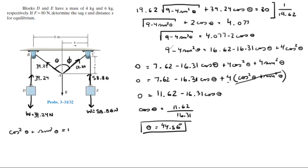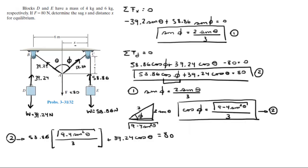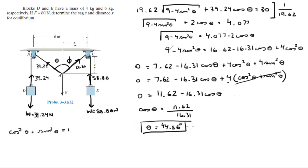Now that we have theta, we can plug it into equation 1 to get phi, and we get that phi is equal to 27.89 degrees. Now that we have both angles, everything becomes straightforward.